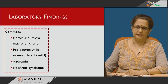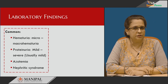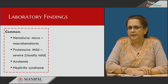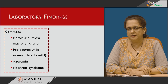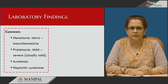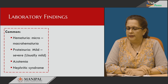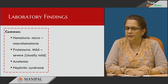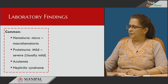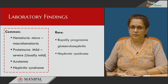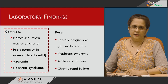The laboratory findings depend on the presentation — whether it is just hematuria or proteinuria. Hematuria is seen in most patients; it could be microscopic or macrohematuria. Microscopic hematuria is defined as at most three RBCs per high-power field in at least two to three urine samples. Proteinuria could be mild, moderate, or severe, but usually it is mild. Azotemia — elevation of blood urea nitrogen — is seen in patients who progress faster to renal failure. Nephritic syndrome is another presentation; rarely, rapidly progressive glomerulonephritis. Acute renal failure is very rare, as is presentation as chronic kidney disease.